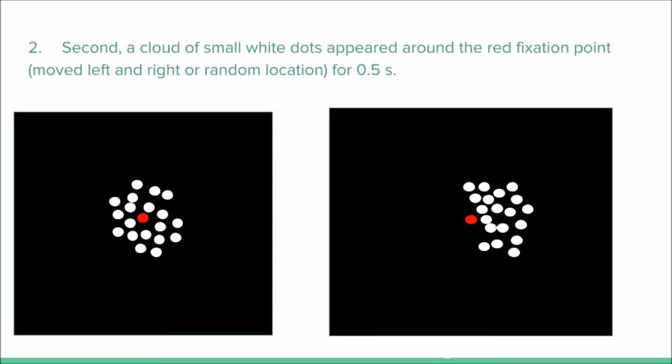Then, participants respond to the dot motion direction by pressing a button to indicate the perceived direction of the dot. The fixation point changes to a dark red and signals the administration of the juice reward or neutral water sample.